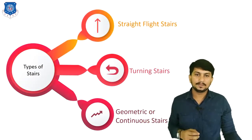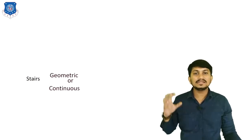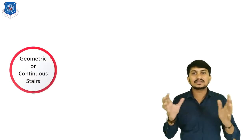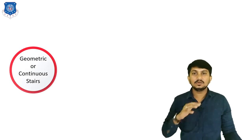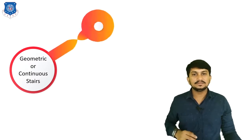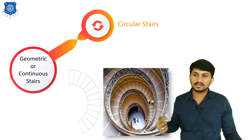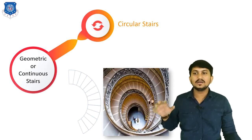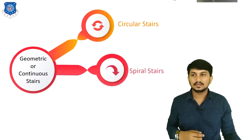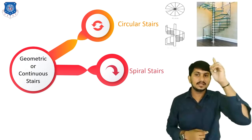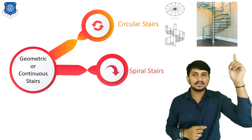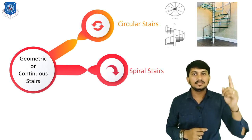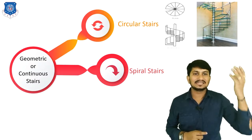Now let's discuss the third type, which is geometric or continuous type of stairs. The name itself says geometric — various shapes of stairs are available in this type. It is also called continuous stairs because there is no landing provided. First is circular stairs, where the shape is circular and there is no landing or resting portion provided. Next is spiral stairs, where the shape is in spiral form, also with no landing. The entire spiral is supported on one vertical member and is made of steel or cast iron.